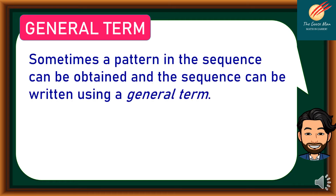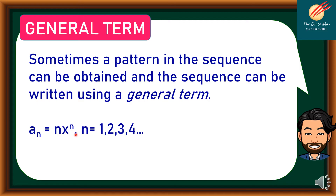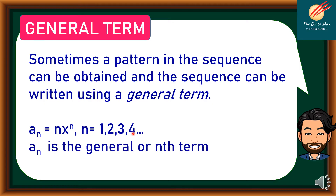Sometimes a pattern in the sequence can be obtained, and the sequence can be rewritten using a general term. For example, a sub n is equal to n raised to n, such that n is equal to 1, 2, 3, 4, and so on. Here, a sub n is the general term, or the nth term.